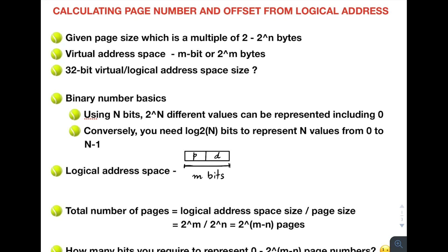In this video we are going to calculate page number and offset from a logical address. The logical address is given, and we need to calculate the page number and offset from it. This is also what the kernel does — the CPU only sees the logical address, and it is the function of the kernel to divide this logical address into page number and offset.